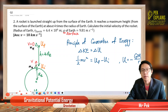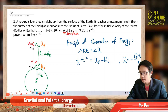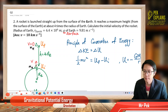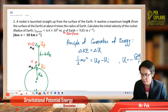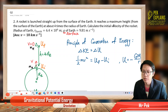This is the second question on gravitational potential energy. A rocket is launched straight up from the surface of the Earth. It reaches a maximum height of four times the radius of the Earth from the surface. Calculate the initial velocity of the rocket.